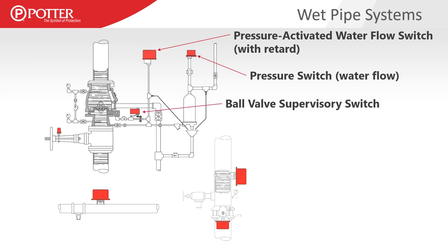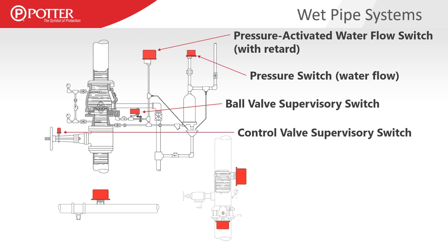Anytime you have a valve that controls flow or pressure to these pressure switches, we have to have a supervisory switch or that valve has to be supervised. NFPA 72 requires that in order to prevent us from inadvertently leaving that valve shut and rendering that pressure switch inoperable. Valve supervisory switches come in different types and styles, each with their own inspection, testing, and maintenance requirements.